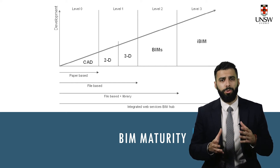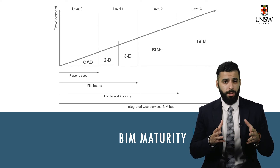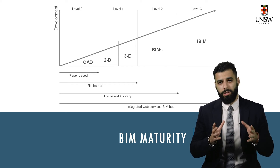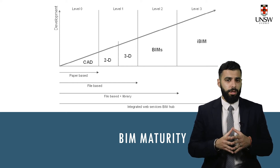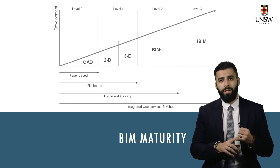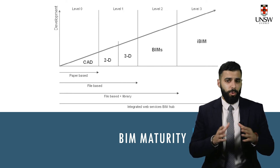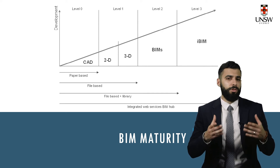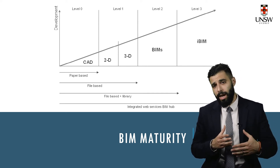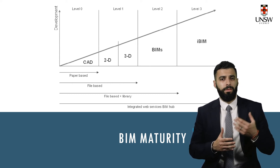Another concept you will hear about regularly in industry is the BIM maturity level — a measure used to assess how developed BIM implementation is in a company or organization. There are four levels on this scale. Level zero is the traditional CAD delivery where no BIM is used; projects at this level are delivered in the traditional way with drawings generated using CAD and then printed on paper for use on site.